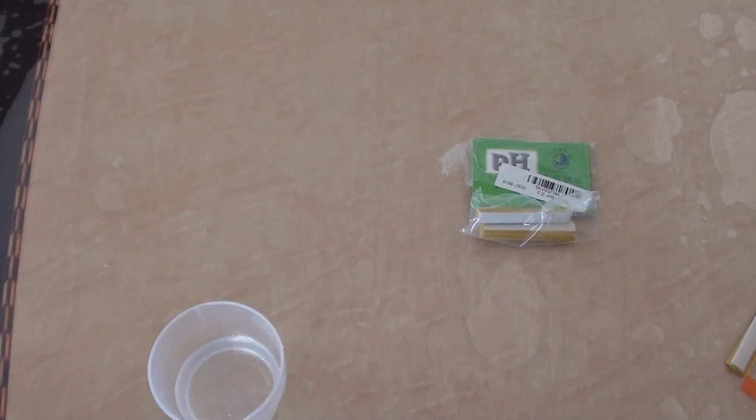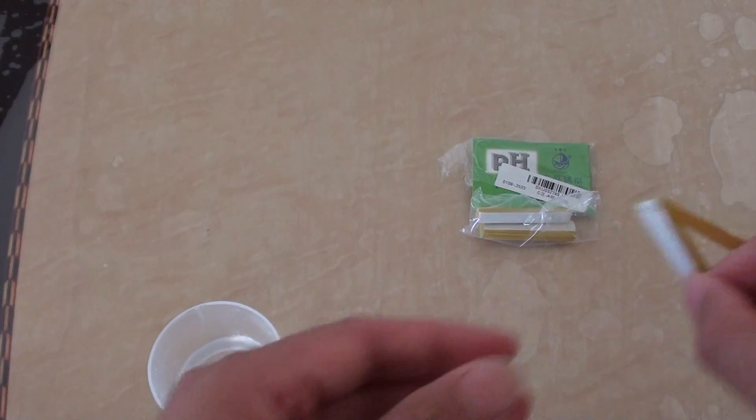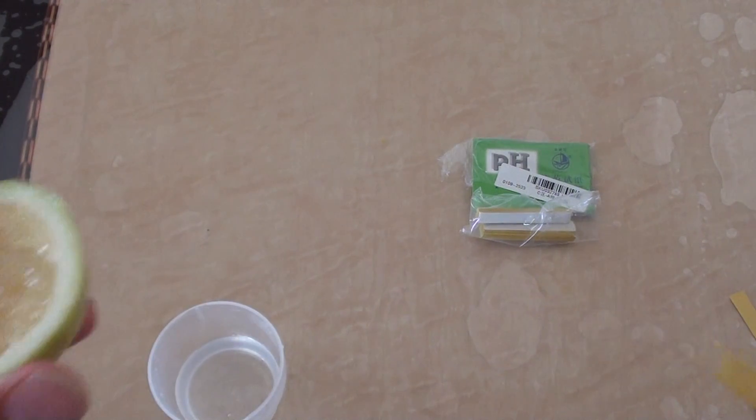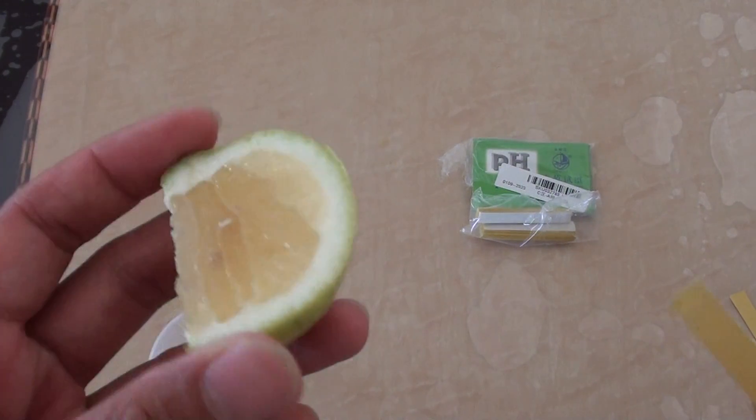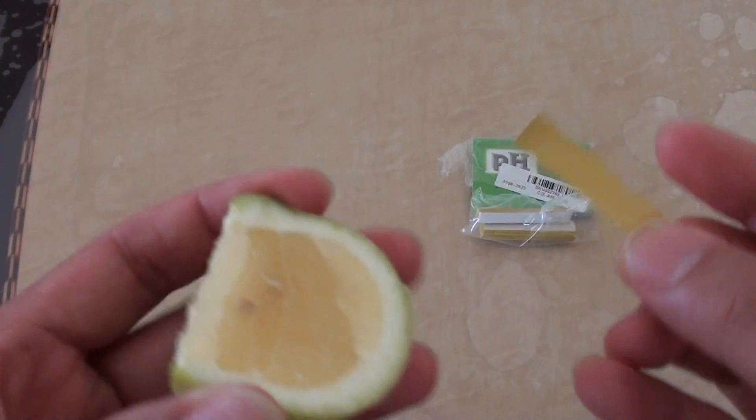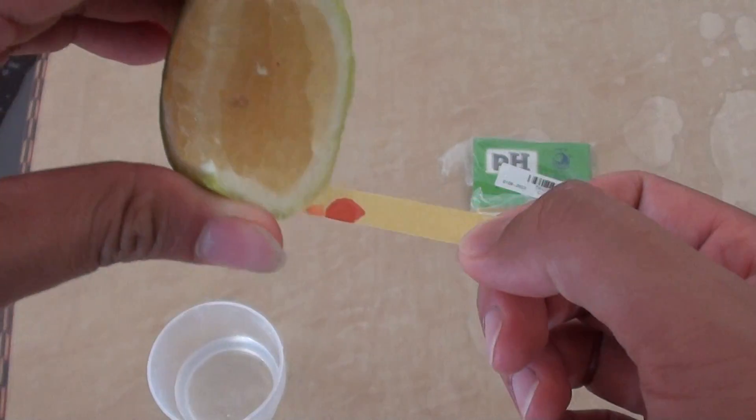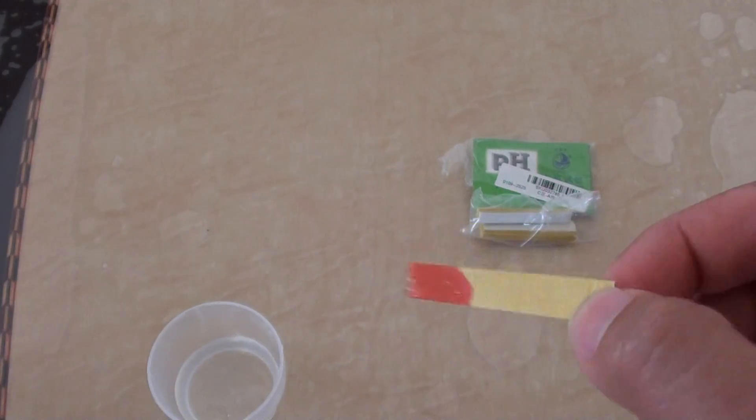So by testing another one, if I get another strip here. If I put on a piece of lemon, the lemon have a very high level of acidity. So by putting on here, like this, I just put a drop in.